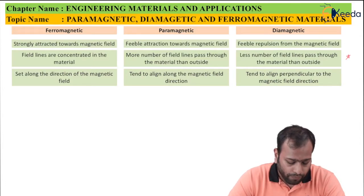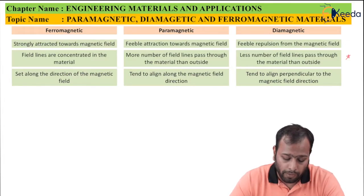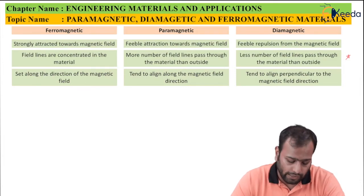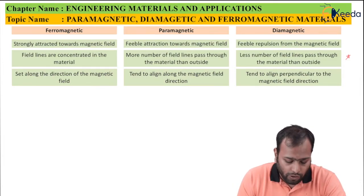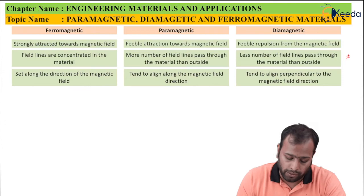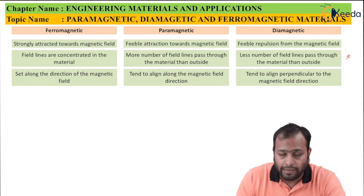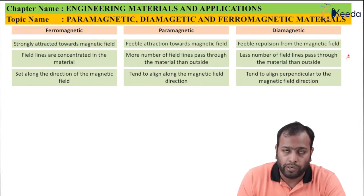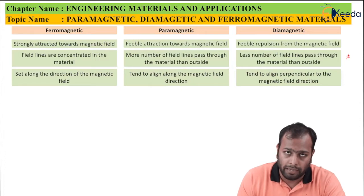Third point: in ferromagnetic, the material sets along the direction of the magnetic field. Paramagnetic aligns towards the direction of the magnetic field. In diamagnetic, the material tends to be perpendicular to the magnetic field direction, minimizing the effect of the external magnetic field.